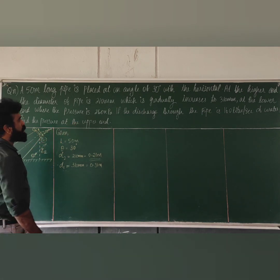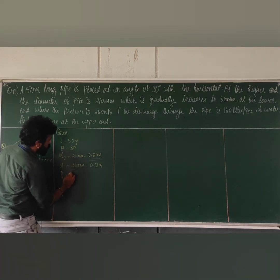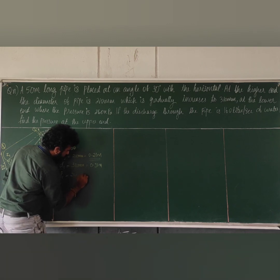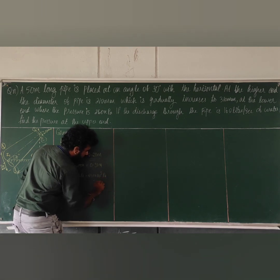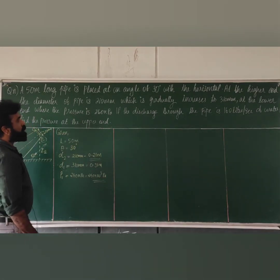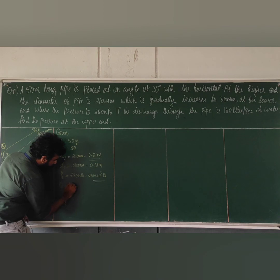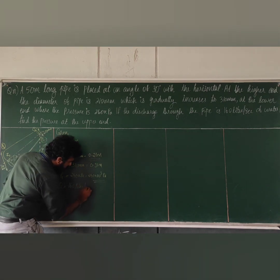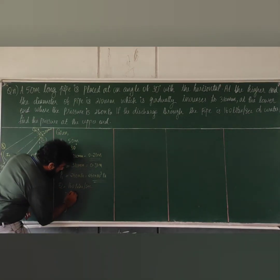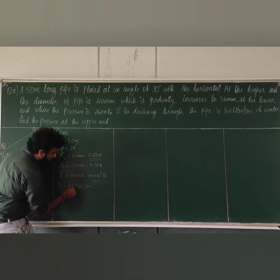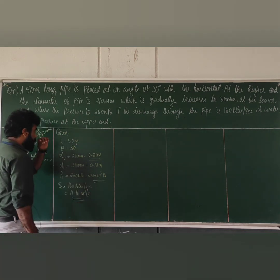The pressure at the lower end, P1, is equal to 260 kilopascal, which is 260 × 10³ pascal, or Newton per meter squared. The discharge Q is equal to 160 liters per second. Converting liters per second to cubic meters per second by dividing by 1000 gives Q = 0.16 cubic meters per second. This is the given data.